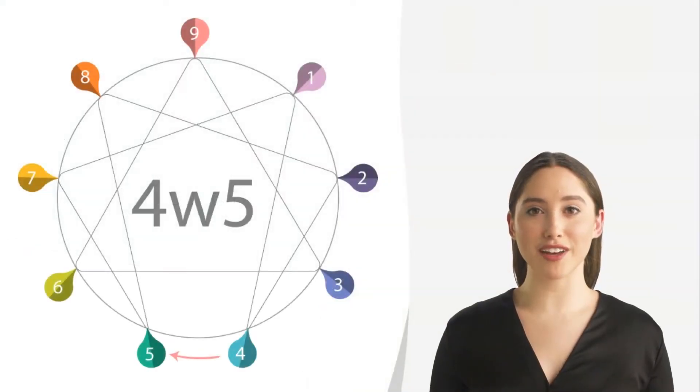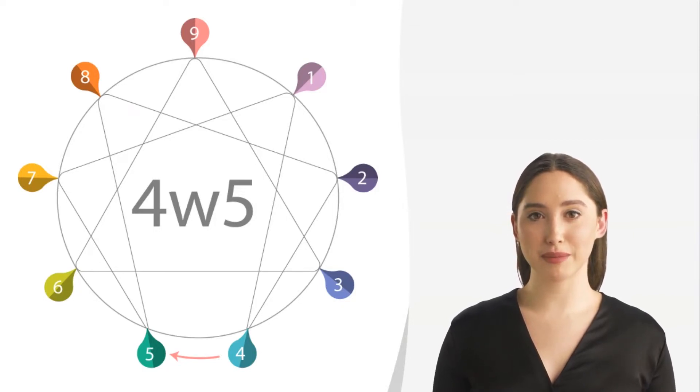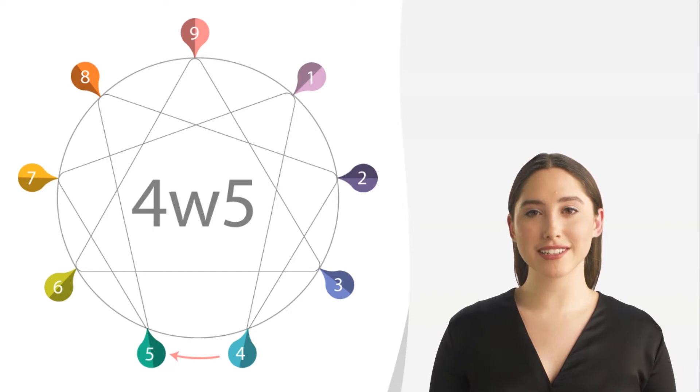Type 4 crossed with 5 are very interesting as they are not part of the same triad. 5s are members of the head triad, while the 4s are from the heart triad. So, in the interaction of these two, we find out that introversion is even more sharpened.